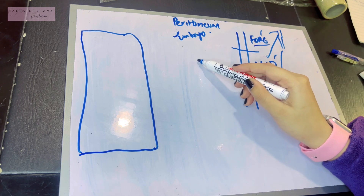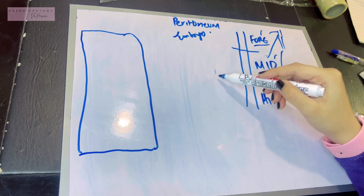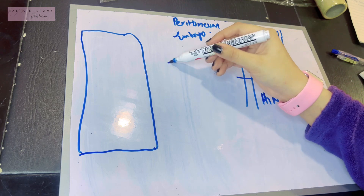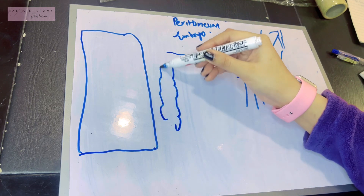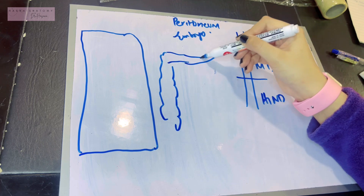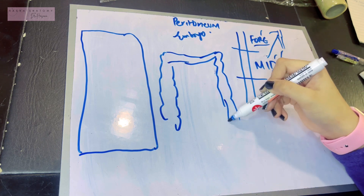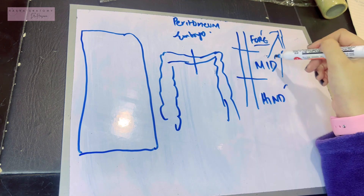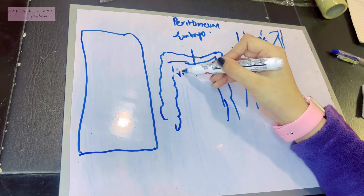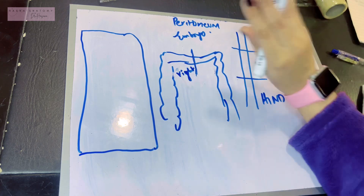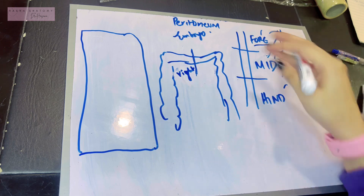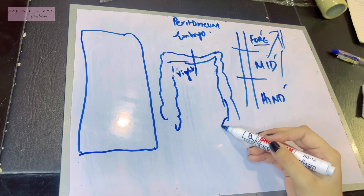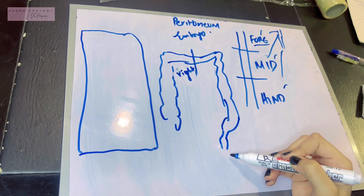The derivatives of the midgut are: the duodenum after the opening of the bile duct, then the jejunum, the ileum, the cecum, appendix, the ascending colon, and up to the right two-thirds of the transverse colon. The hindgut then gives rise to the left third of the transverse colon, the descending colon, the sigmoid colon, and the proximal part of the rectum.